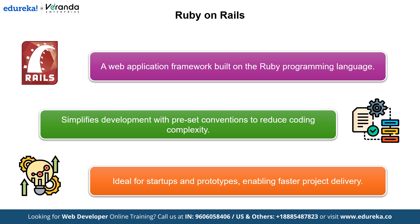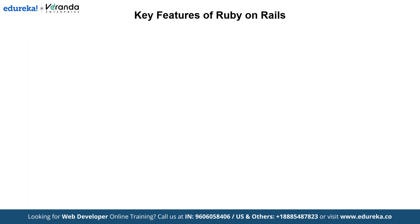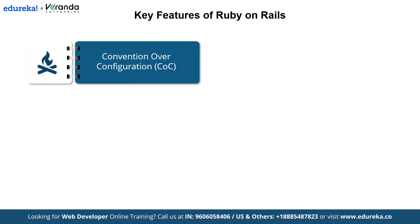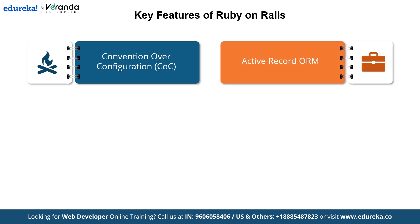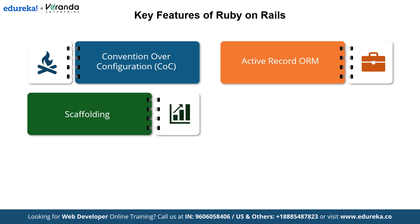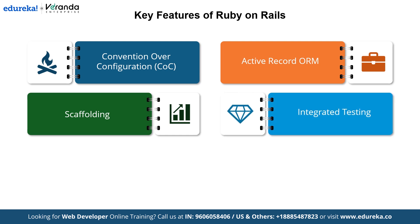Let's explore Ruby on Rails' key features. First is Convention over Configuration — Rails makes many decisions for you by default, so you don't waste time on configurations, allowing developers to focus on writing code. Next is Active Record ORM, which makes database interaction a breeze by simplifying how you create, read, update and delete records, letting you work with databases in a clean and intuitive way. Then comes Scaffolding, which generates the basic structure of your application automatically, giving you a starting point and saving time and effort. Rails also includes integrated testing tools, helping developers ensure their code works as expected right from the start, meaning fewer bugs and smoother deployments.